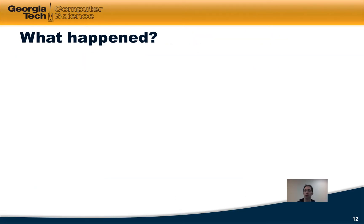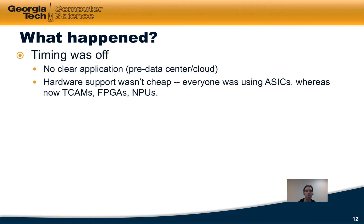So what happened to active networks? This technology was introduced almost 20 years ago — why didn't these ideas come to fruition sooner? For one, the timing was off: at the time there was no clear application for this type of programmability. One of the killer environments for SDN was the data center and the cloud, but at the time that simply didn't exist. Additionally, hardware support wasn't cheap — everyone was using ASICs. Now we have more options such as TCAMs, FPGAs, and network processors.